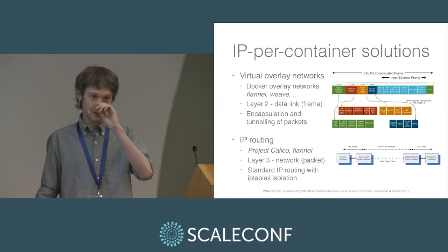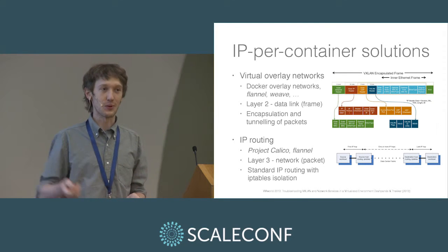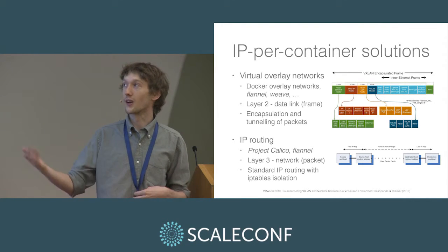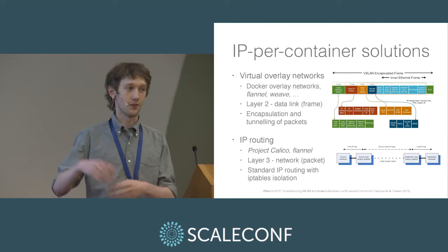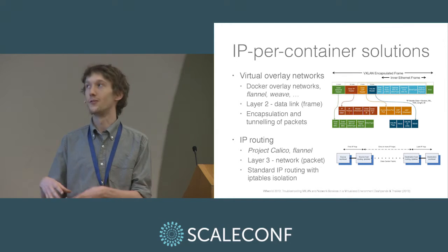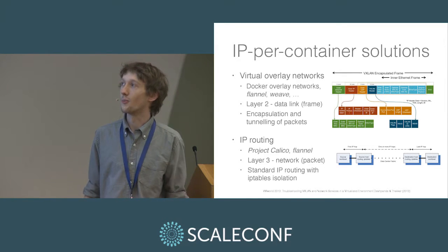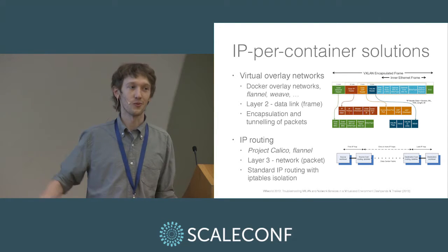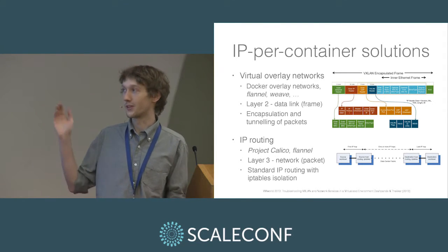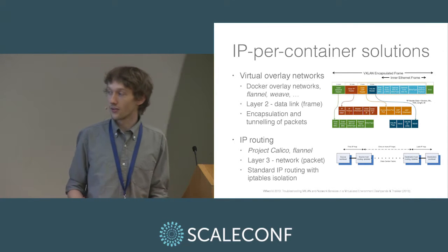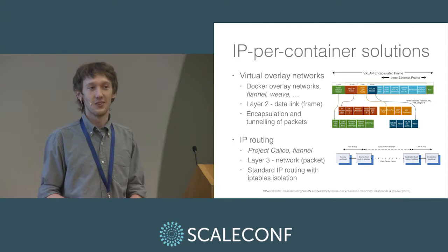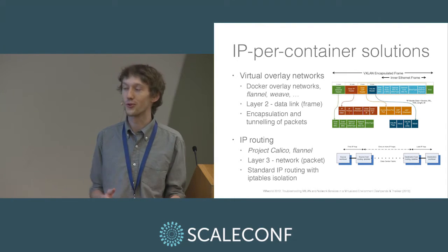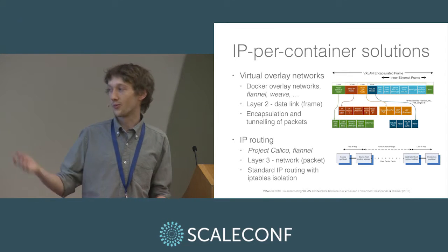There are lots of different solutions for the IP per container problem. The first, which is pretty popular, is basically just tunneling through the cluster using packet encapsulation — each packet is encapsulated with extra information and a routing service on every node knows where to send things. This sounds like it has a lot of overhead, which it potentially does, but thankfully there is native support in the Linux kernel for this kind of thing. Another solution is to use standard IP routing — pretty cool because it doesn't have as much overhead, but there is a lot of management of routing tables you need to do.